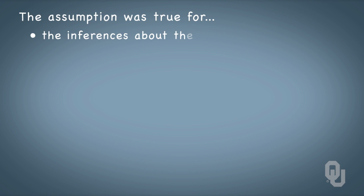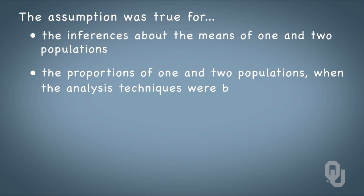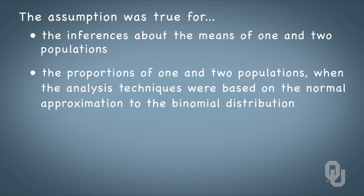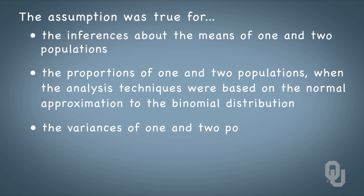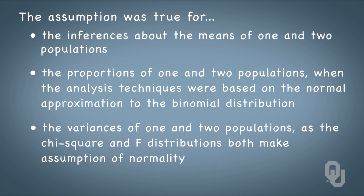That assumption was true for inferences about the means of one and two populations. It was true for proportions of one and two populations, where our analysis techniques were based on the normal approximation to the binomial distribution. And it was even true for our studies of variance from one and two populations, as the chi-square and F distributions both make the important assumption of normality in the underlying distribution of the random variable being measured.